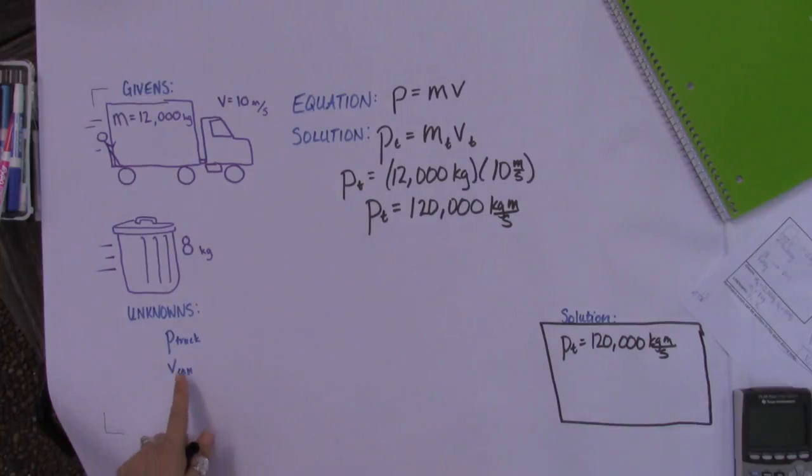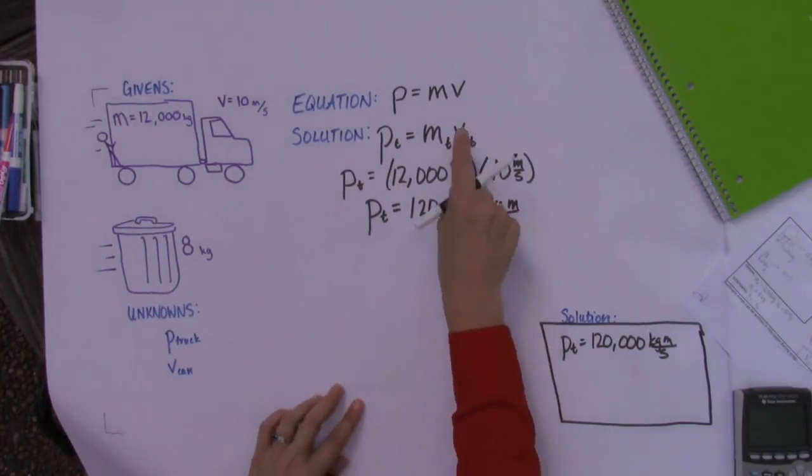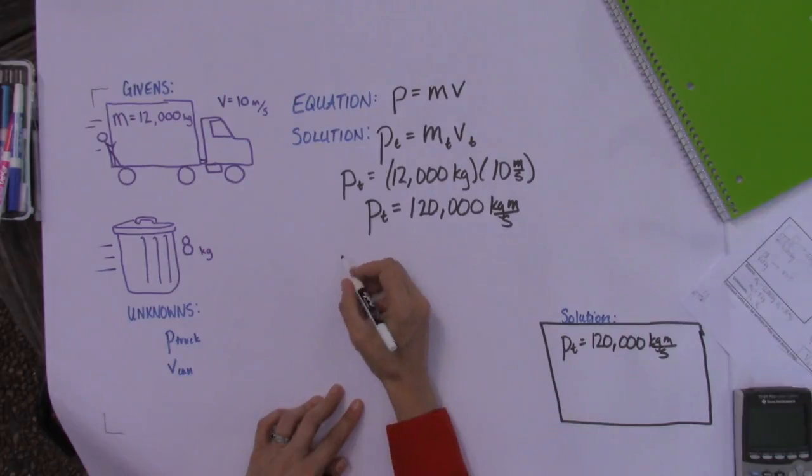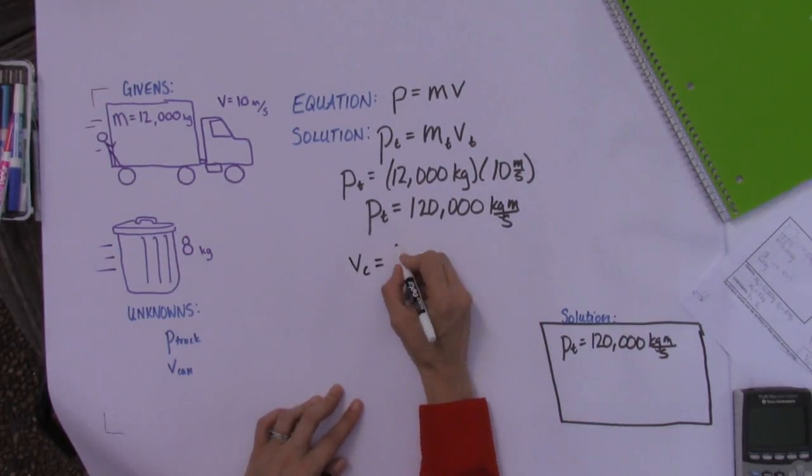So now we know that the momentum of the can is 120,000 kilogram meters per second. We take this equation right here and we divide out the masses, and we get that the velocity of the can would be the momentum of the truck divided by the mass of the can.